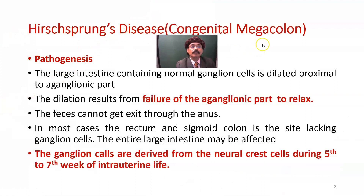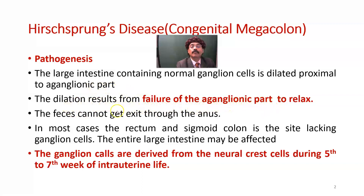In Hirschsprung's disease pathogenesis, the normal large intestine containing normal ganglion cells — that means containing normal myenteric plexus and Meissner's plexus — is dilated proximal to the aganglionic part. The dilation results from failure of the aganglionic part to relax, so feces cannot exit through the anus. In most cases, the rectum and sigmoid colon are the site of lacking ganglion cells, though the entire large intestine may also be affected.